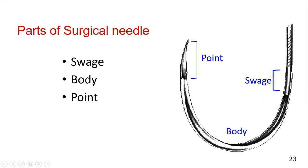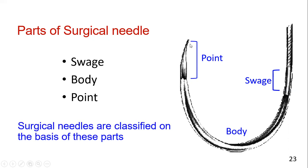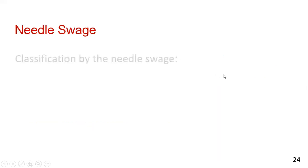Here we will discuss needle cutting types. The round body and reverse cutting are distinct. This is the cutting portion — the tip penetrates the tissue and the cutting portion cuts the tissue. The needle is classified based on the swaged portion, body, and point.